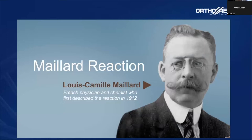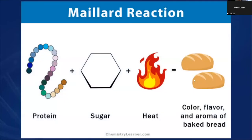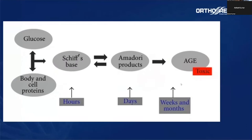Dr. Maillard was the one that described the Maillard reaction. The Maillard reaction is when you take some protein and add it to sugar in the presence of heat, and it forms the advanced glycation end products. This end product is useful for the food industry, but it also occurs in our body when we have glucose with the proteins of our body cells and the body's heat, forming these advanced glycation end products.